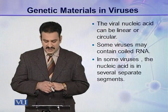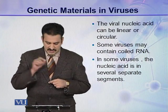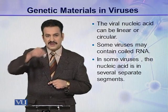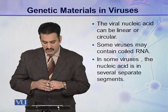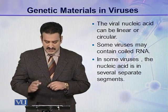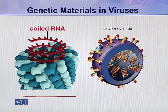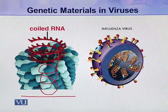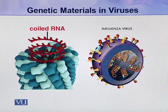The viral nucleic acid can be linear or circular. It may be a linear or circular molecule of RNA or DNA. Some viruses may contain coiled RNA — the RNA inside the capsid is coiled. For example, in this virus you can see a single coiled RNA molecule present inside the capsid. Similarly, in the influenza virus, there are several separate segments of nucleic acid present inside the capsid. So different types of genetic organizations are present in viruses.